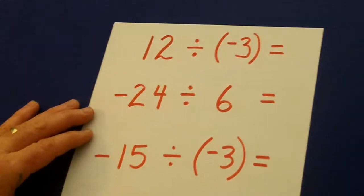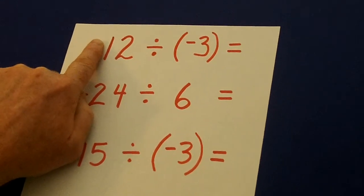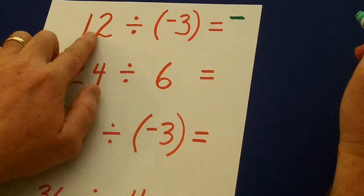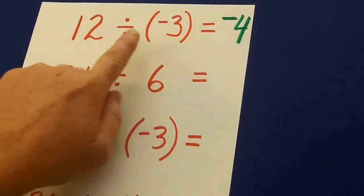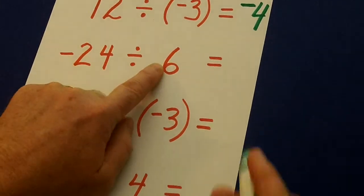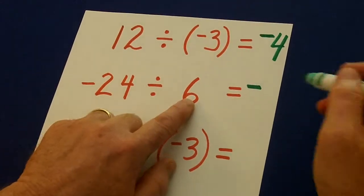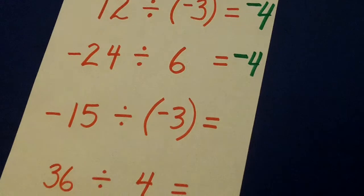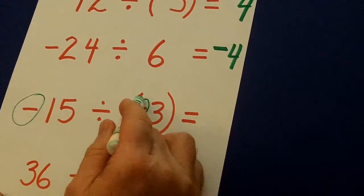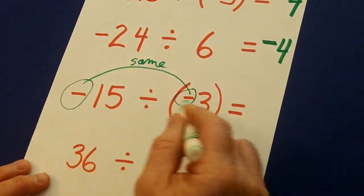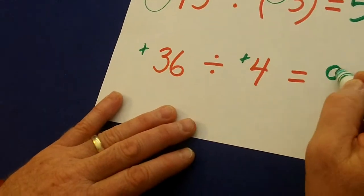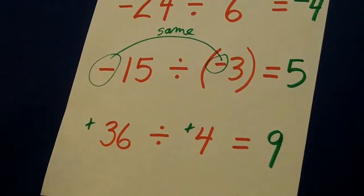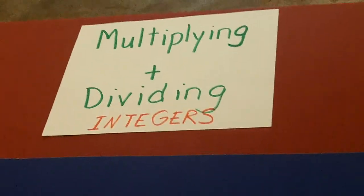Division is the exact same rule. We got a positive divided by a negative — the answer is going to be negative. 12 divided by 3 is 4, so 12 divided by negative 3 is negative 4, because the signs are different. Here the signs are different — one negative, one positive — and this divided by this is 4 again. Two negatives — same sign — so 15 divided by 3 is 5, and same sign is positive. These are both positive, so we're going to have a positive answer. Those are the rules for division, along with multiplying integers.